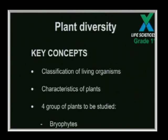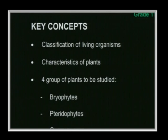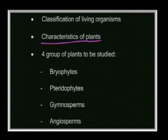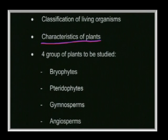The main concepts we will be looking at include: first, a brief discussion about the classification of living organisms; next, the characteristics of plants, which you have already studied; and then an overview of the four main groups — the bryophytes, the pteridophytes, the gymnosperms, and finally the angiosperms, which are the flowering plants.